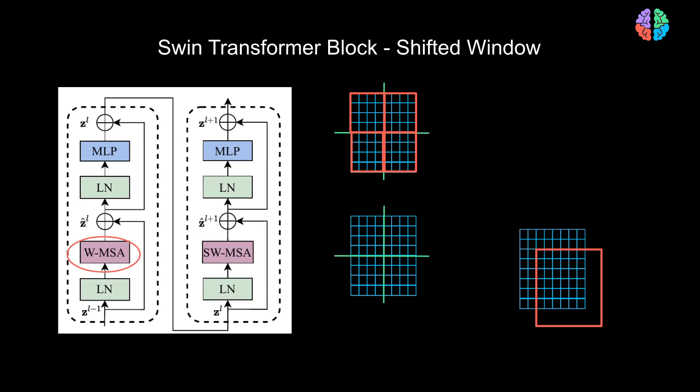The solution they propose in this paper is to shift the window by two patches, and then compute the attention within these windows. What's going on in the second layer of the Swin Transformer is precisely that. Now you may ask, what can I do about this empty space created without any pixels? A naive solution is to zero-pad that space.